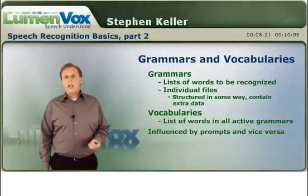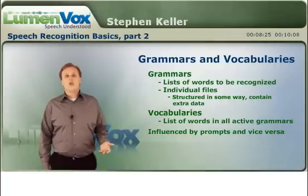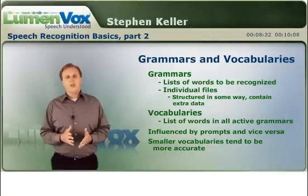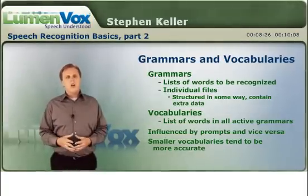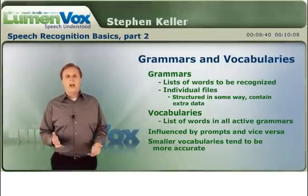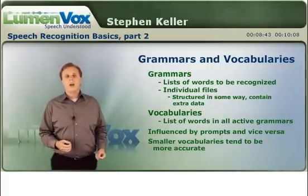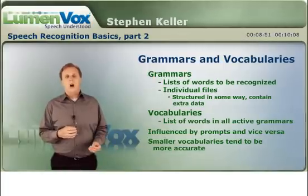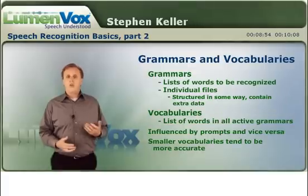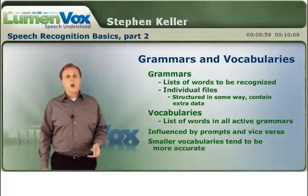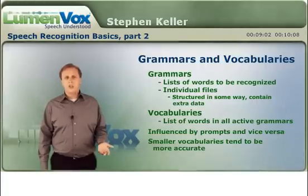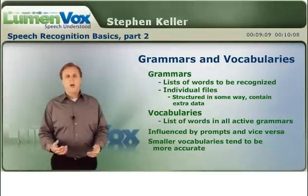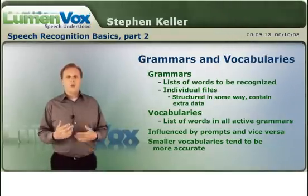One important thing to understand when you start getting involved in speech development is that generally speaking, smaller grammars equal higher accuracy for recognition. What happens with a smaller grammar is you narrow the search space when searching our acoustic models. With really big grammars, you have a higher chance that two words or phrases sound very similar, making it harder for the speech engine to differentiate between them. You also generally increase the search space and decrease accuracy. So smaller grammars, smaller vocabularies equal higher accuracy. You can successfully use large vocabulary applications — some have thousands of words and work pretty well — but they're going to be harder to develop, take more time to build and test, and require more troubleshooting.